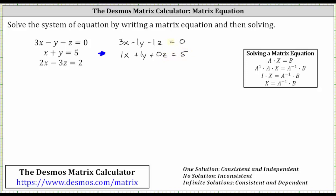And notice how the third equation is missing the y term. Let's write the third equation as 2x plus 0y minus 3z equals 2.